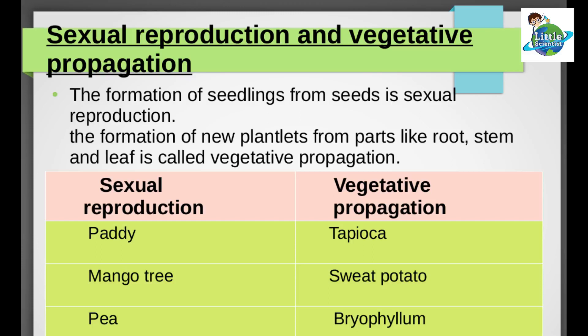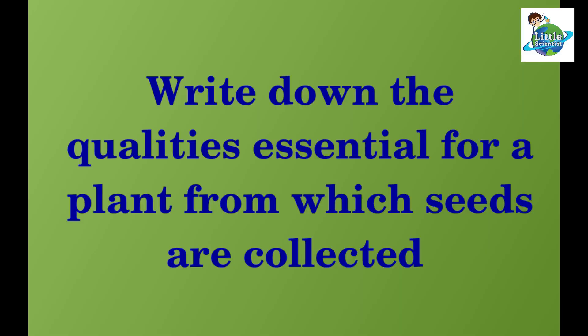Sexual reproduction is the formation of seedlings from seed. The formation of new plantlets from parts like root, stem, and leaf is called vegetative propagation. Here there are two columns: one for sexual reproduction and the other for vegetative propagation. We know paddy, mango tree, etc., are under sexual reproduction, and tapioca, sweet potato, bryophyllum, etc., are under vegetative propagation. Now, complete the table by observing your vegetable garden.